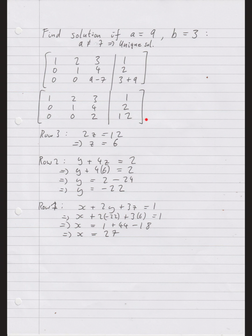Starting from the last row and working back: two z equals twelve, so z equals six. Back to row two: y plus four z equals two — put in six for z and solve, getting y equals minus twenty-two. Back to row one: x plus two y plus three z equals one — substitute minus twenty-two for y and six for z, and solve for x, giving x equals 27. So the unique solution is x equals 27, y equals minus 22, z equals 6.